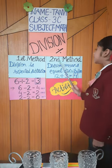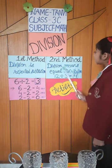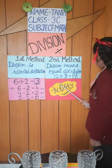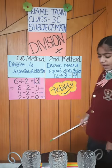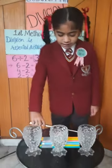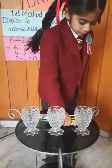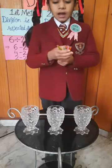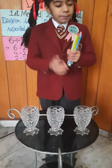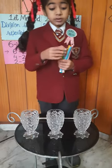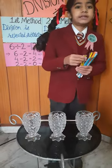Second method: division means equal distribution. I will show you the second method with an activity. I have 12 pencils. I will distribute them among 3 classes.